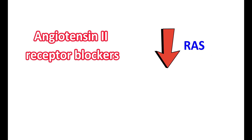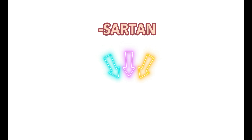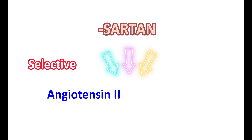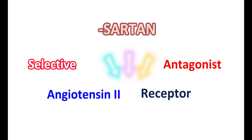Angiotensin 2 receptor blockers are one category of medications that inhibit the activity of the renin-angiotensin system. They are commonly known as ARBs and can be identified by their suffix 'sartan.' In this suffix, S indicates selective, A indicates angiotensin 2, RT indicates receptor, and AN indicates antagonist. So sartans are selective angiotensin 2 receptor antagonists, also called blockers as they block the actions of angiotensin 2.